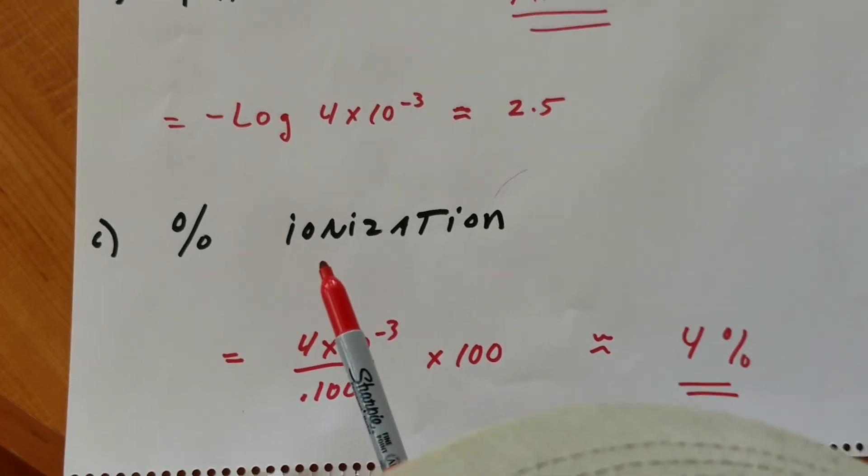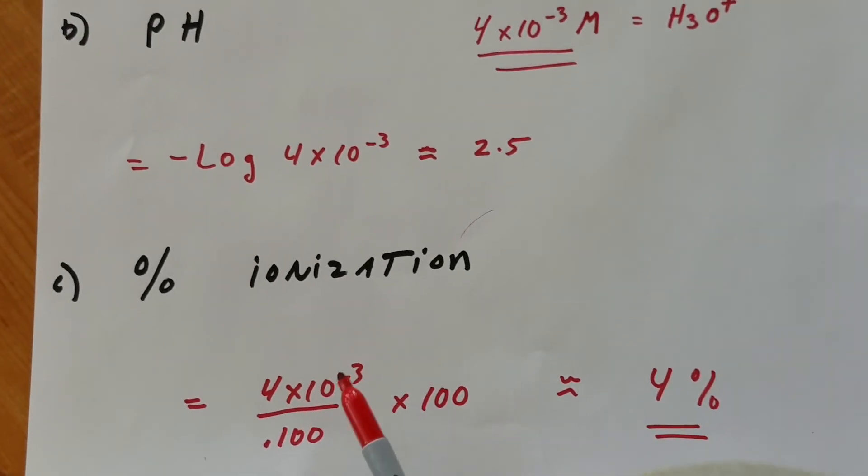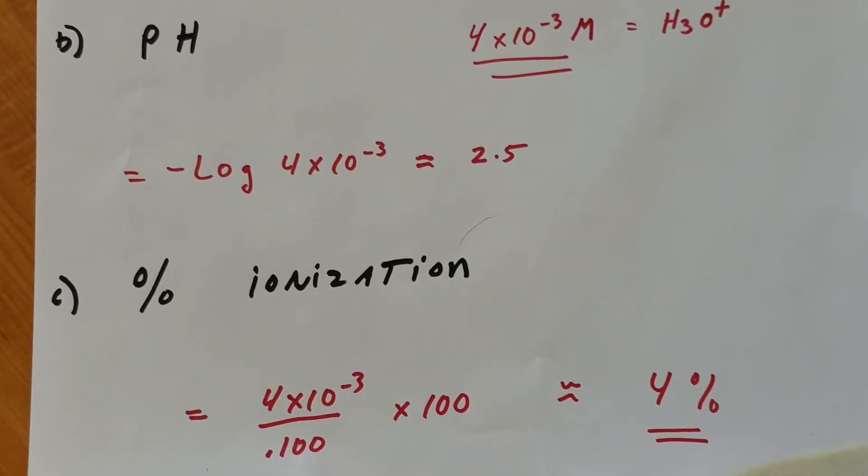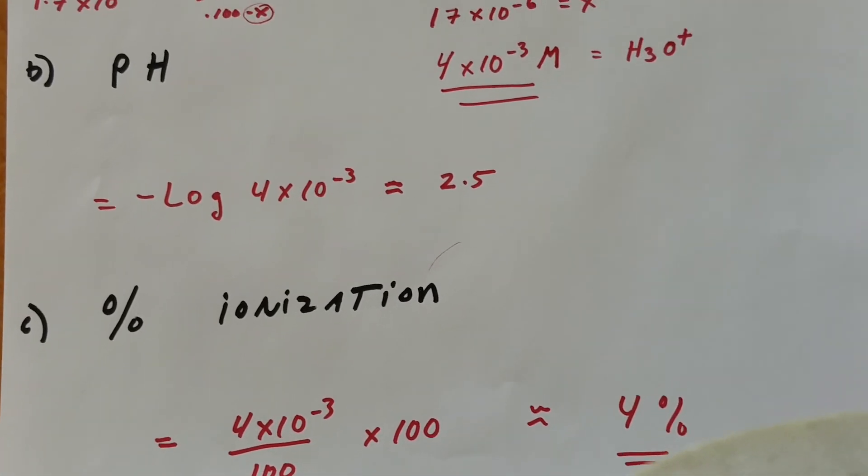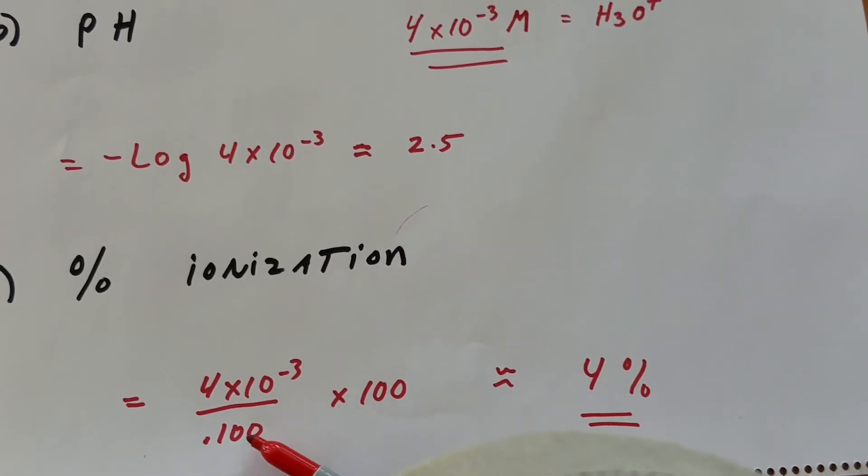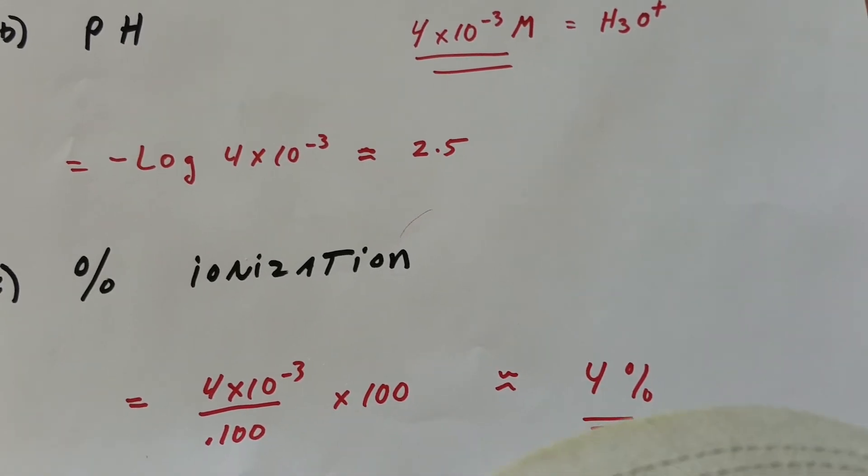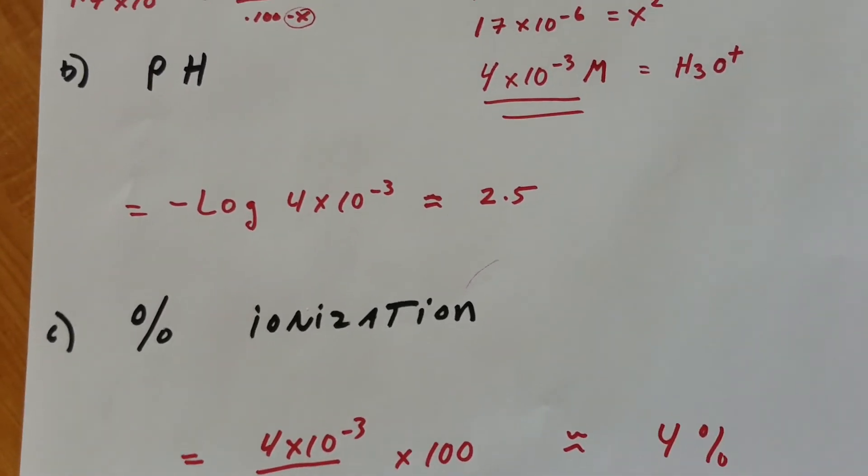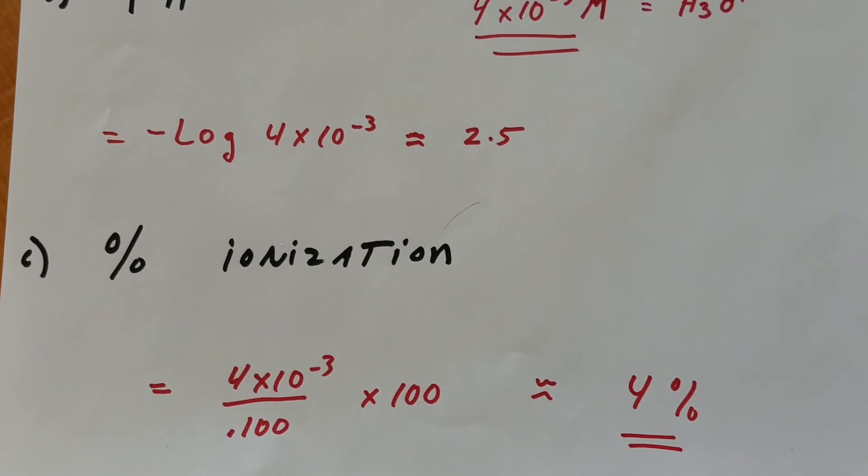So finally, the percent ionization is the part over the whole. The part that broke up was 4 × 10^-3. The total was 1 × 10^-1, or 0.100, times it by 100, and that gives me approximately 4%.